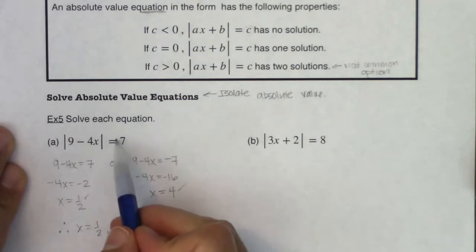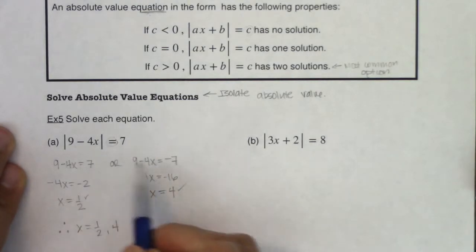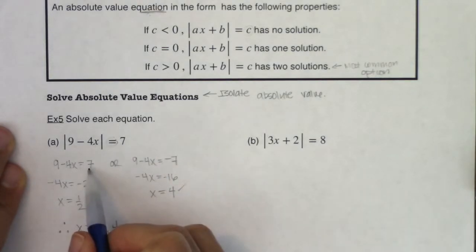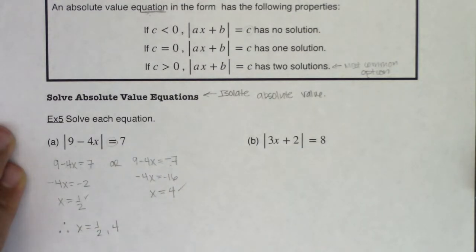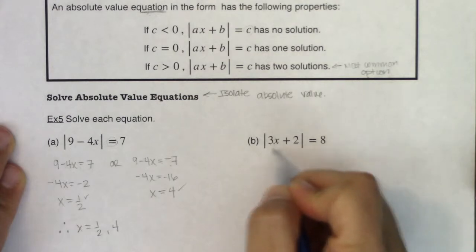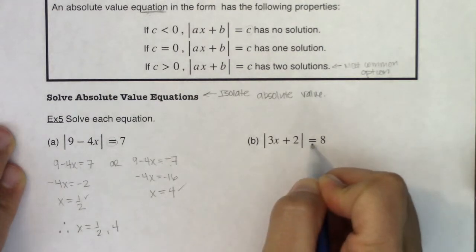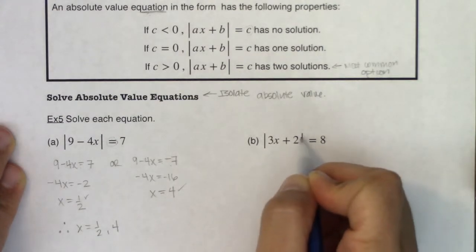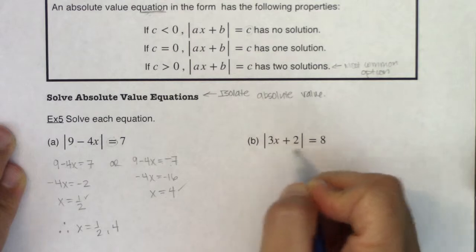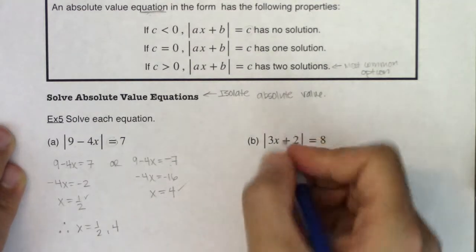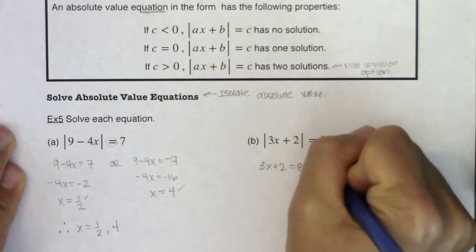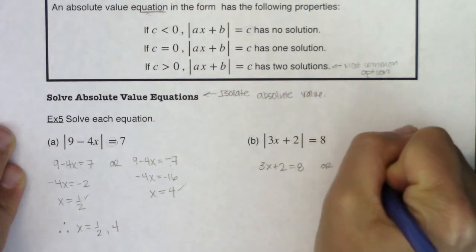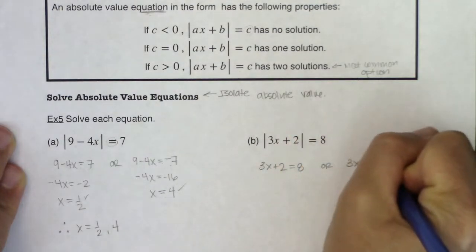The technique when you have the equal sign: set up two equations — equal to the value on the right side, and its opposite. For example 5b, I have an absolute value expression, an equal sign, and the absolute value is already isolated. So I get either 3x plus 2 equals 8, or 3x plus 2 equals negative 8.